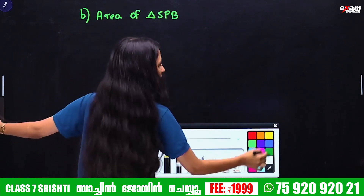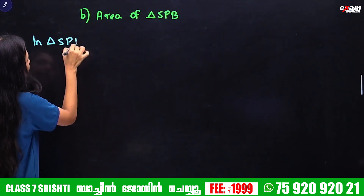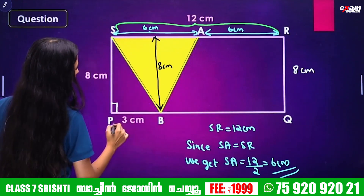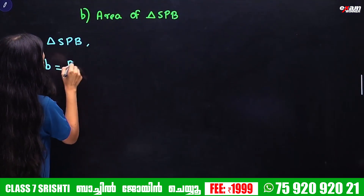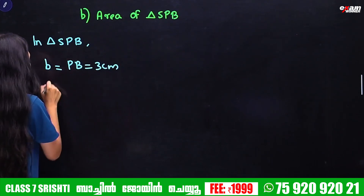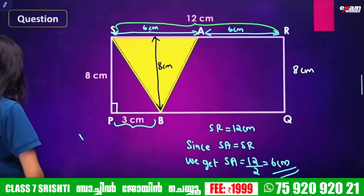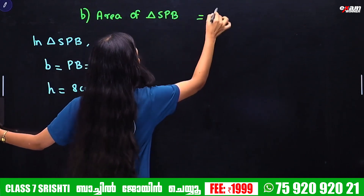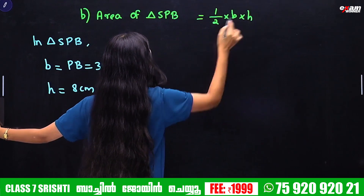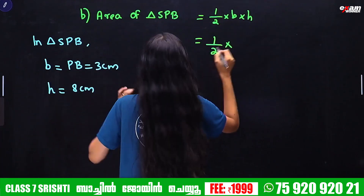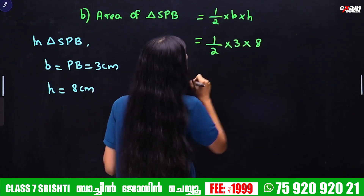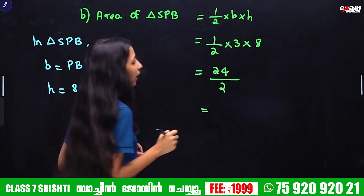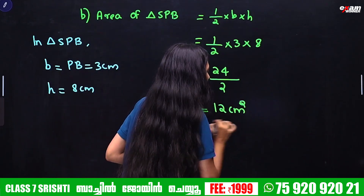In triangle SPB, PB is the base. PB is equal to 3 cm. The height is 8 cm. So we do half into b into h: half into 3 into 8. 3 into 8 is 24. 24 divided by 2 is 12. The area is 12 cm².